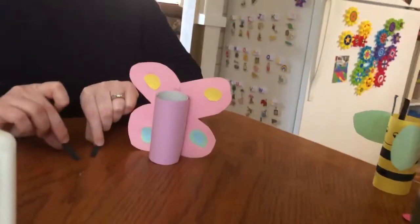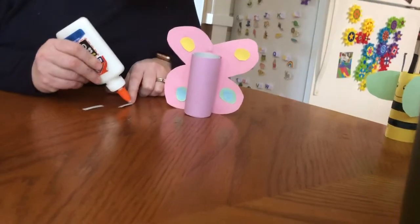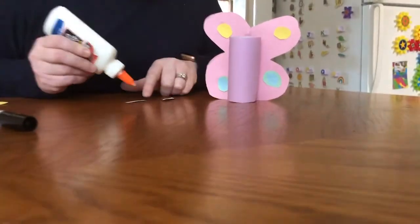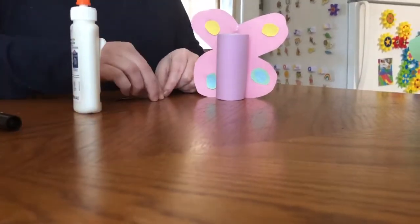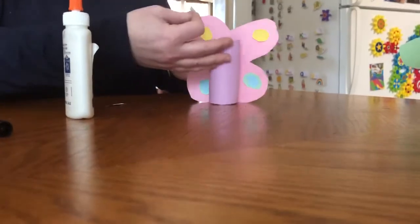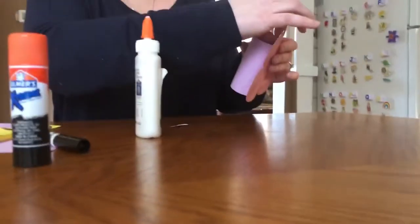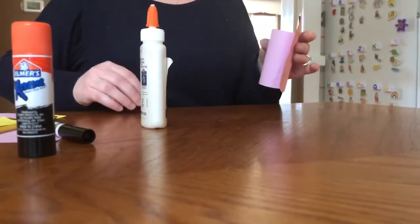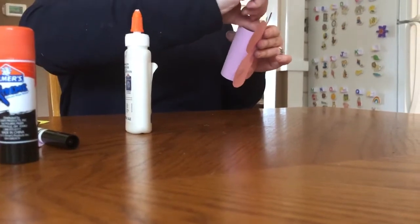Now I didn't have black construction paper, so I had to color some white paper black, which is fine. I'm going to add a little bit of glue and I'm going to glue these on to the back side of our butterfly.